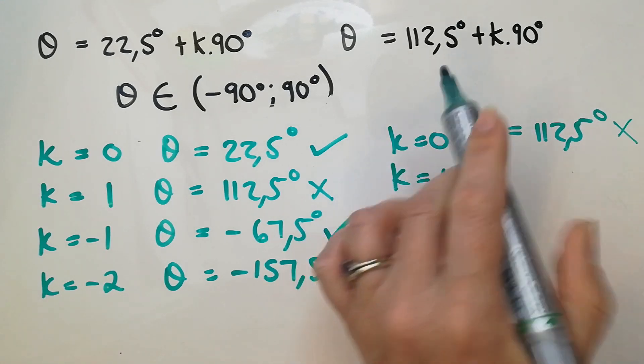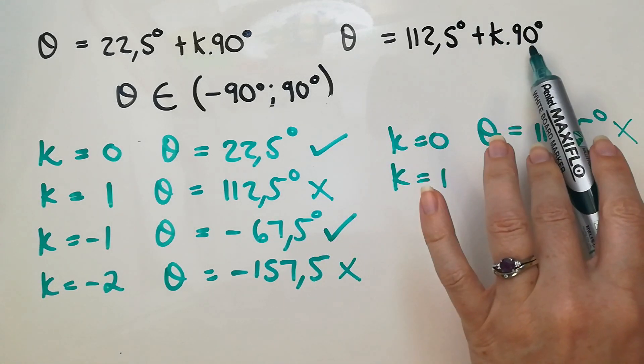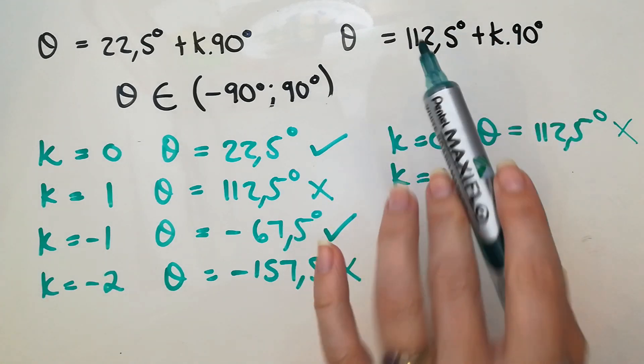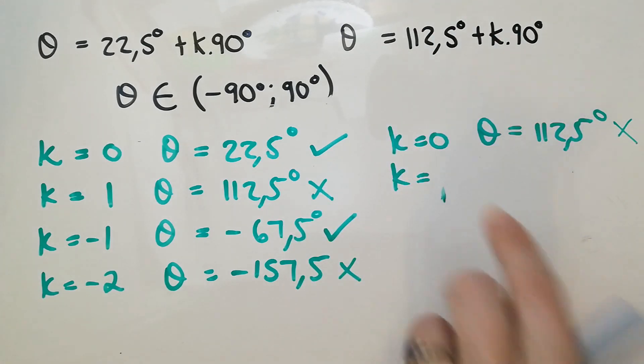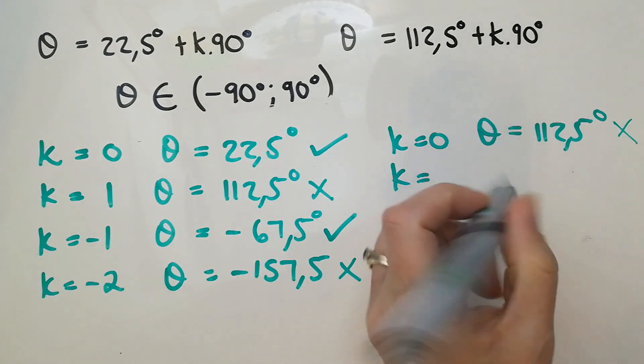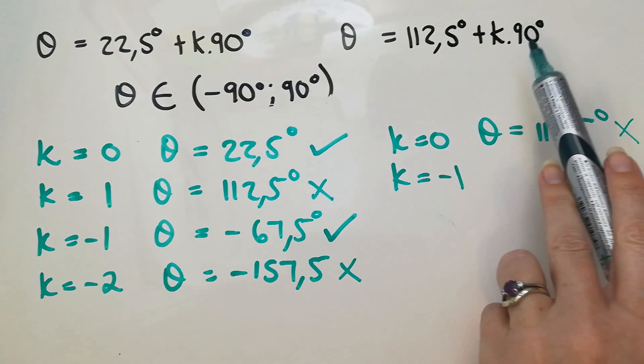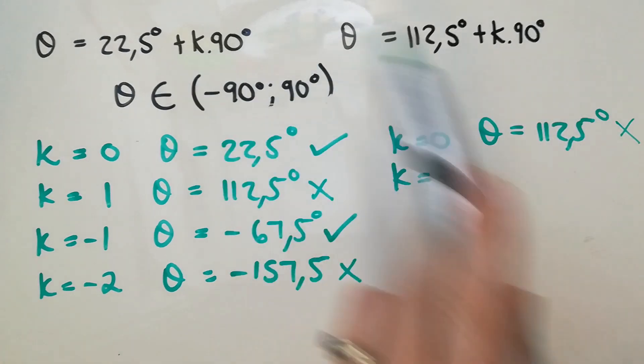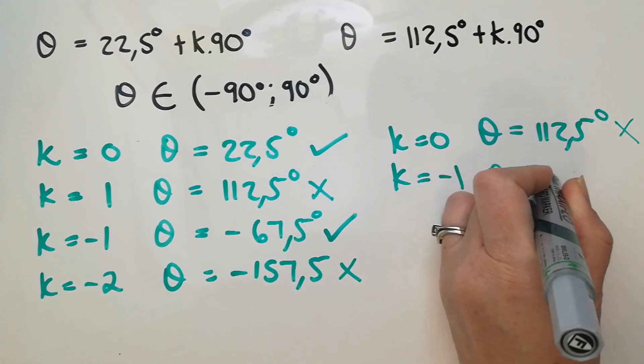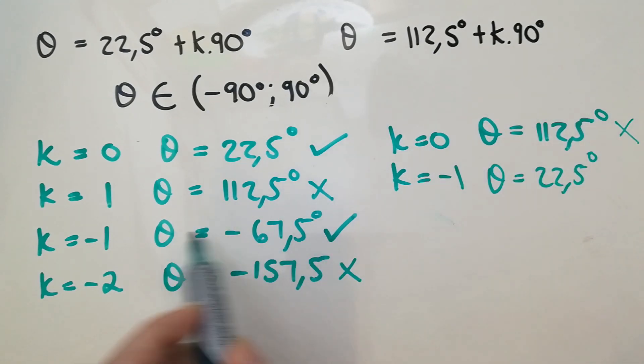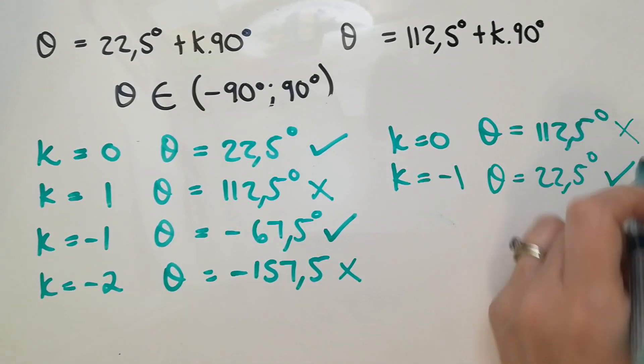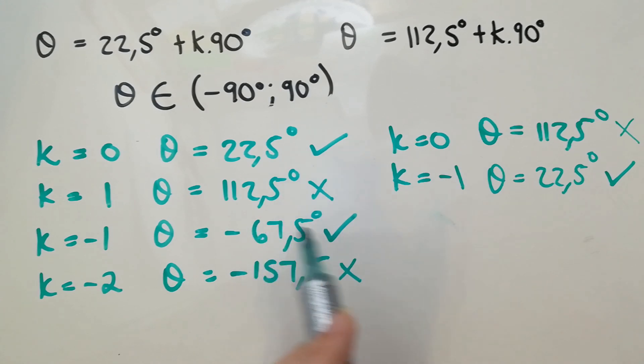If k is one, we're going to add on the 90, but that's already too big. So let's not do that. What about k being negative one? We did that a moment ago. If k is negative one, I'm minusing the 90, and then I get to the 22.5. That does work, but I already had it. So now you can see I'm just repeating information.